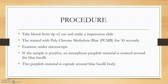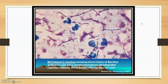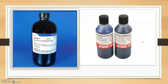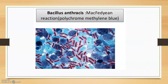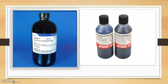It is actually due to the retention of the stain by the poly-D-gamma-glutamic acid capsule. This is the example, you can see: short chains of bacillus and bacillus lying among the amorphous disintegrated capsular material. WBCs can also be seen. This is the polychrome methylene blue stain — also a McFadyean reaction. This is the polychrome methylene blue solution.